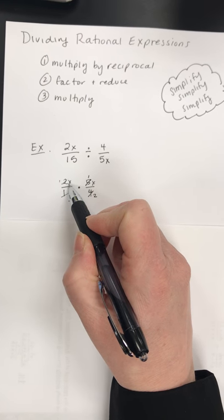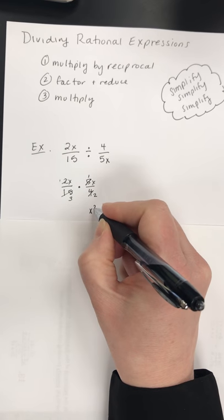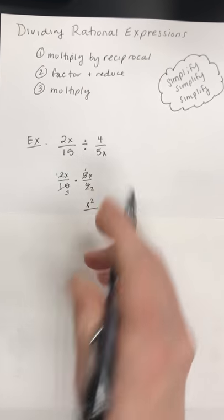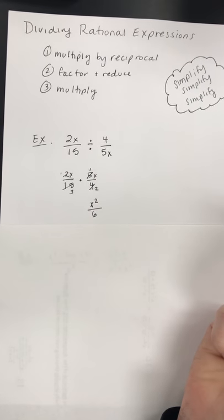And there's really nothing else I can reduce, so I'm going to just multiply. So in the numerator here I have x, in the numerator here I have an x, x times x is x squared. And in the denominator I have a 3 and a 2, 3 times 2 is 6. So that would be my final answer.